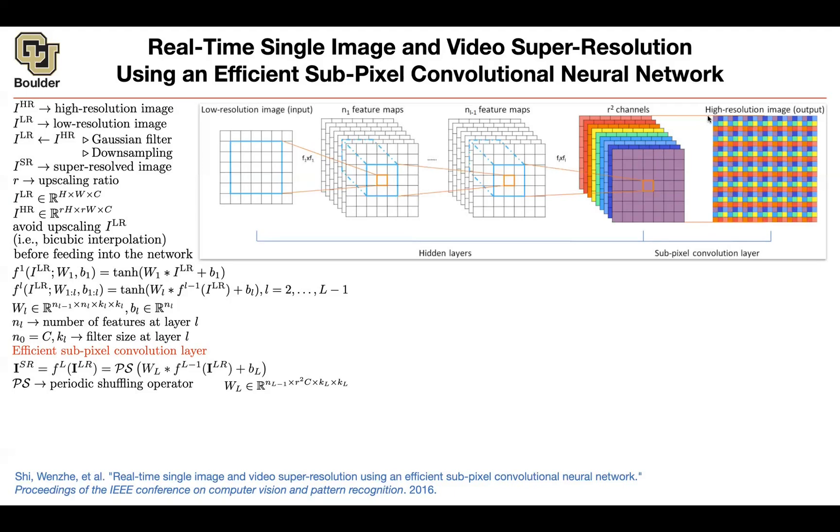This operation here - how do you actually code it up? Visually speaking it's intuitive what you're doing, but how are we actually going to code it up? Let's take a look at the size of this convolution. It's going to have a kernel size and then it's going to take you from dimension nl-1, which is the dimension of these feature maps here, to r² times c.